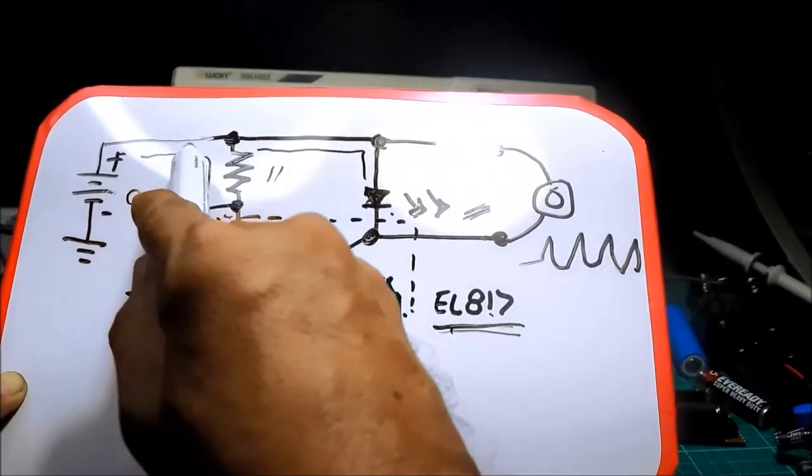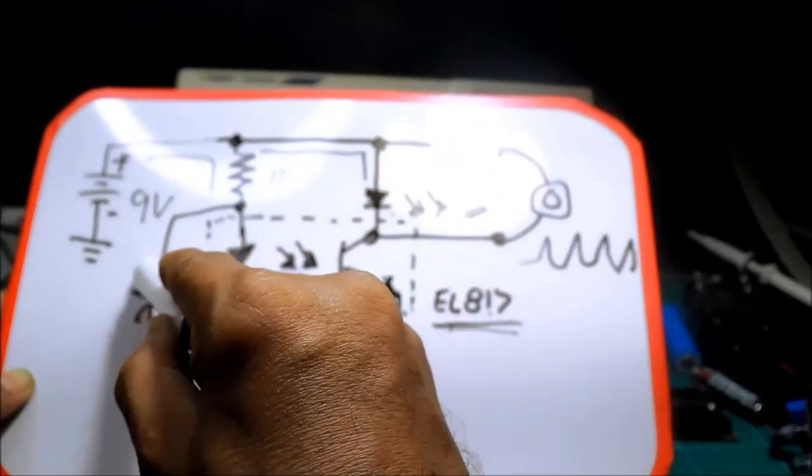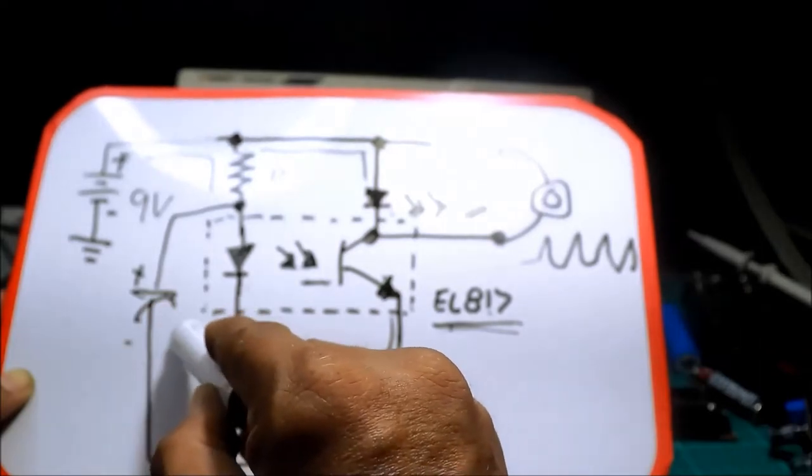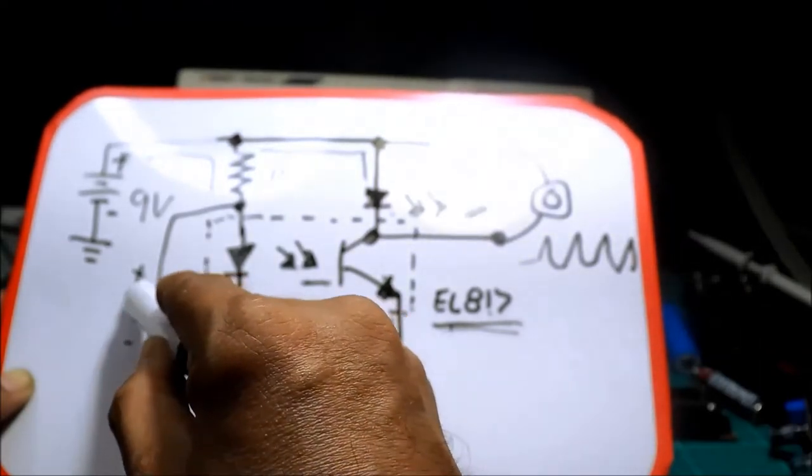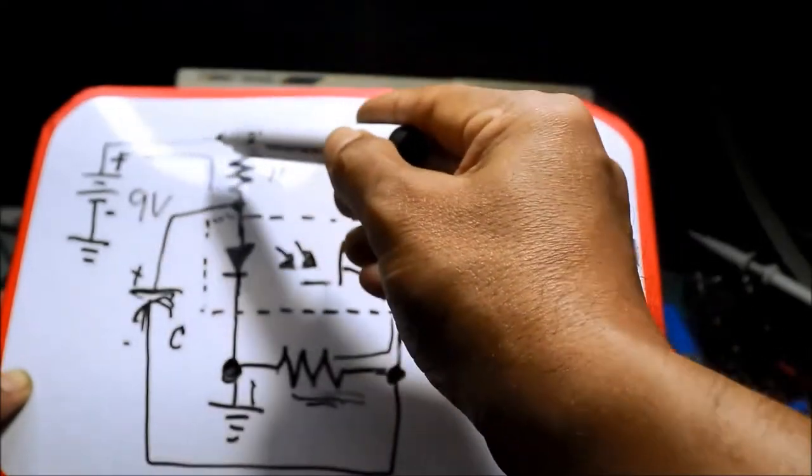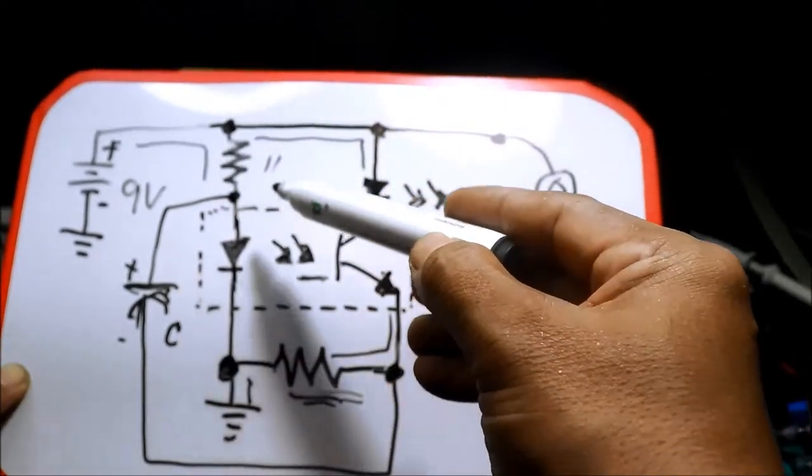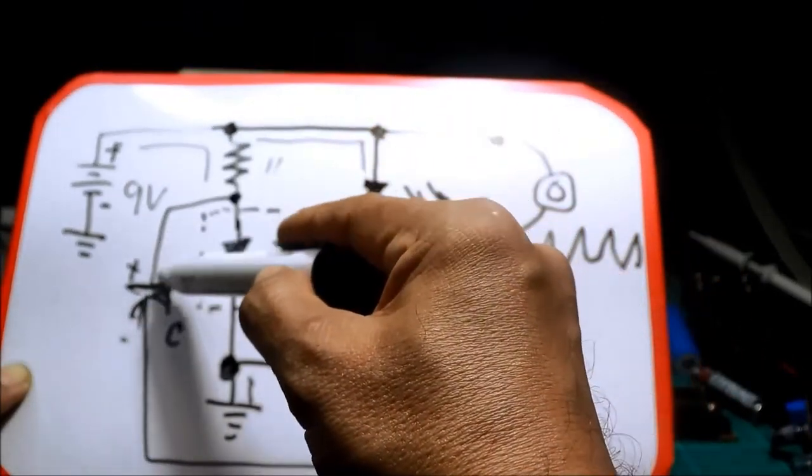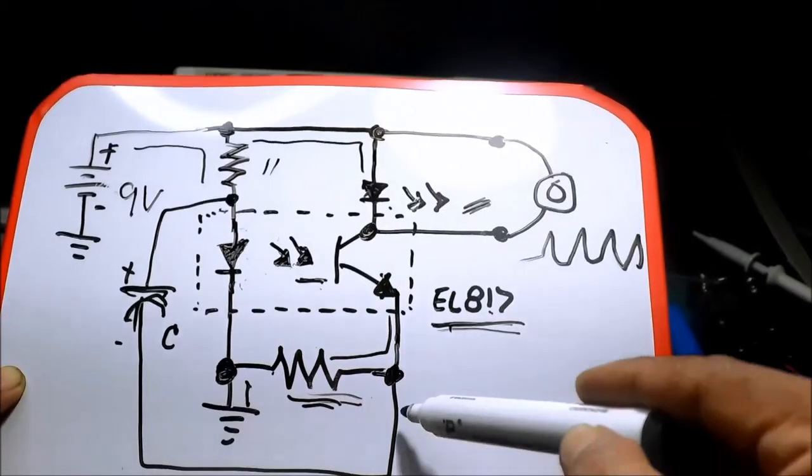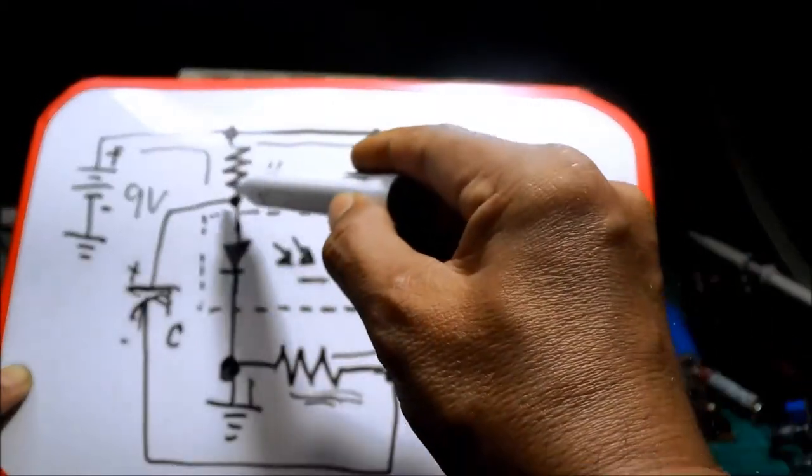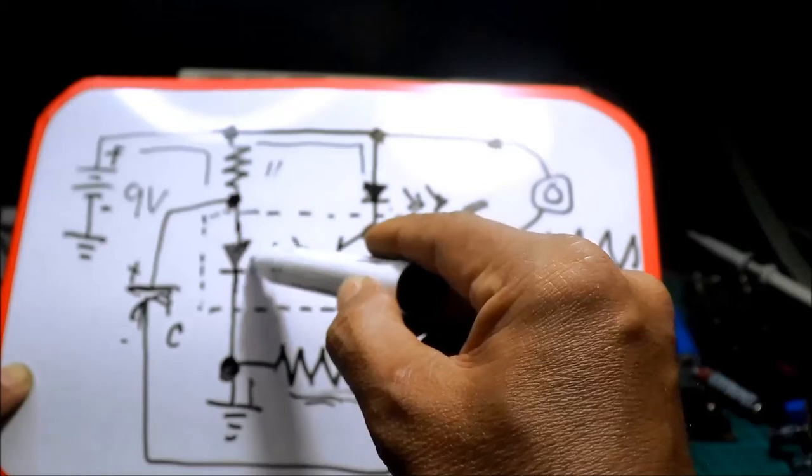Ang takbo ngayon ng kuryente, mag-charge muna yung kapasitor. Pag nag-charge siya, dito ang takbo. Charge. Papuntang resistor, then ground. Mababa-bypass yung photodiode.